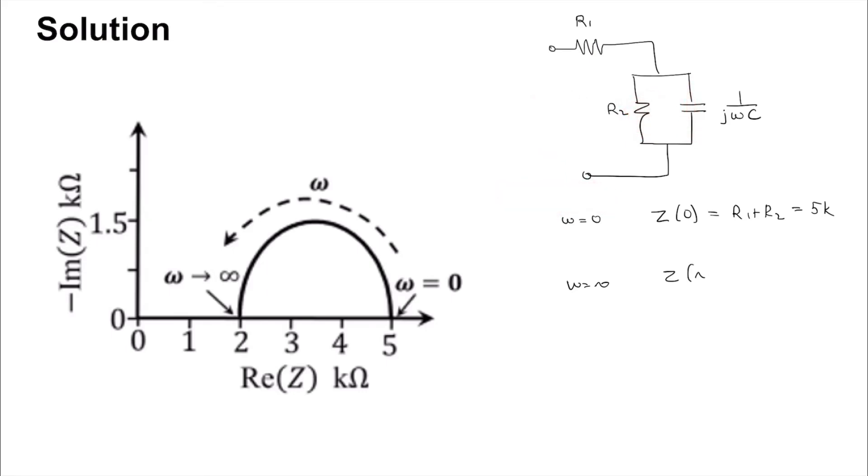Z of infinity is equal to R1, and from the plot we can say that Z of infinity is 2 kilo ohm.